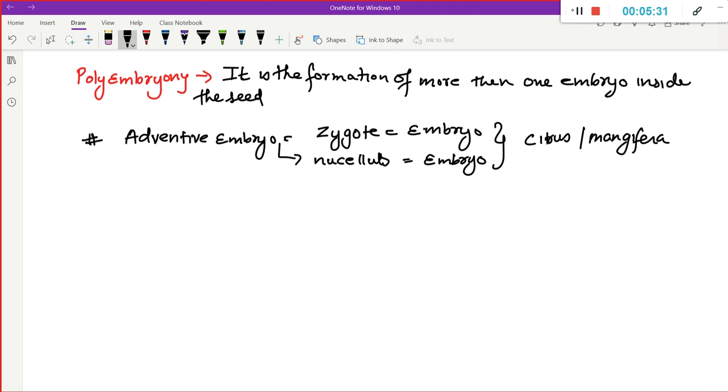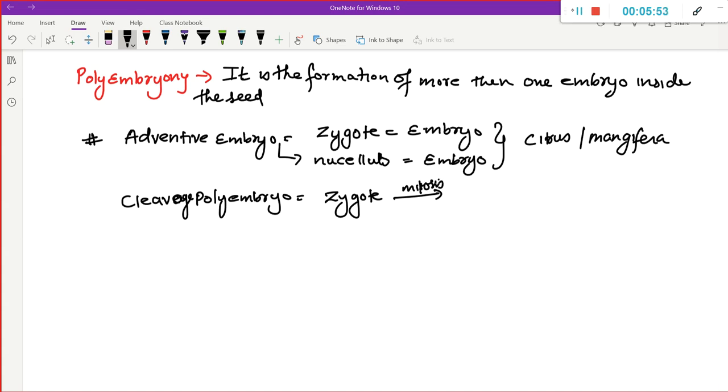So, this is also a condition of Polyembryony. Other condition which we see is Cleavage Polyembryony. What is Cleavage Polyembryony? So, we will see that, for example, we have this Zygote.